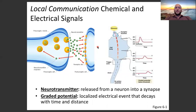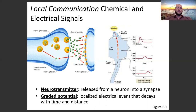Local communication also happens with neurotransmitters. An electrical signal travels down the long axon of the neuron and causes neurotransmitters to be released at the end of the axon. These neurotransmitters send a signal to the cell right next to them — the other side of the synapse. The synapse is the space between the end of an axon and its target cell.